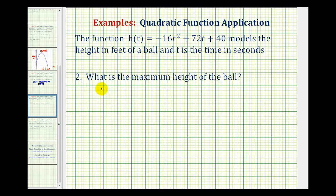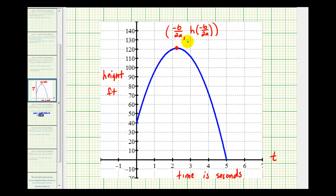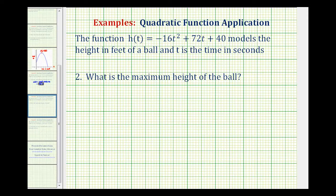The second question is to determine the maximum height of the ball, which remember would occur at the vertex where the x-coordinate or the t-coordinate would be the time it takes to reach the maximum height, and the y-coordinate would actually be the height of the ball. So to determine the y-coordinate of the vertex, we first have to determine the x-coordinate, or in this case the t-coordinate, and then we'll evaluate the function at that value of t.